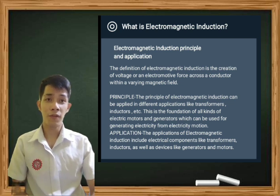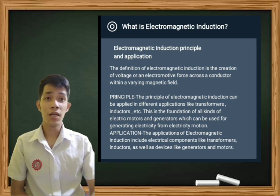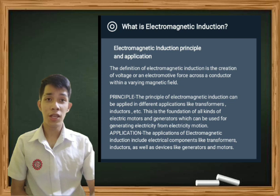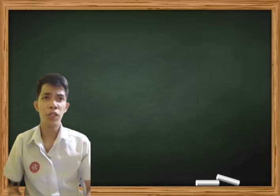This is the foundation of all kinds of electric motors and generators, which can be used for generating electricity from motion. Applications of electromagnetic induction include electrical components like transformers and inductors, as well as devices like generators and motors.